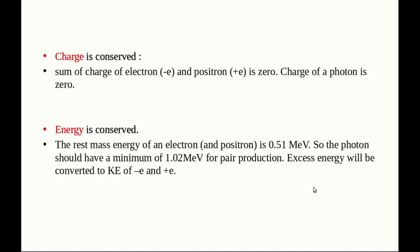The sum of rest mass energies of the final particles is 0.51 MeV plus 0.51 MeV, which equals 1.02 MeV. So the minimum energy of the incident photon must be 1.02 MeV for pair production to occur.